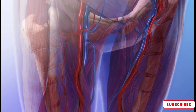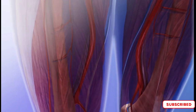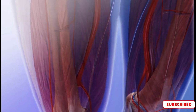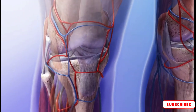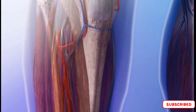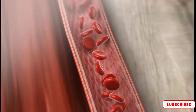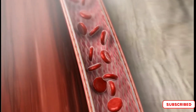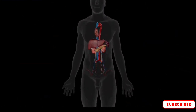Excretory organs are present in all kingdoms of classification. In animals, the excretory organs vary depending on the complexity of the organism. For example, in protozoa, contractile vacuoles perform the excretory function, while in annelids, nephridia perform the function. In arthropods, Malpighian tubules are responsible for excretion, and in mammals, the kidneys perform the function.